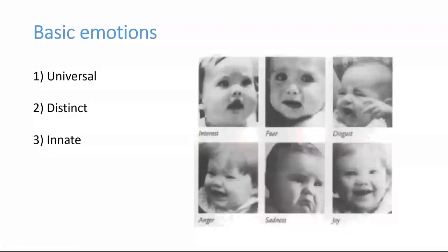The reason why this matching task seems so easy for most people is that basic or primary emotions have three characteristics. First, they are universal, meaning you can find these expressions across the world. Second, they are distinct, meaning each emotion is characterized by particular facial and physiological responses. And lastly, basic emotions are thought to be innate, meaning they are experience independent. For example, babies did not have to be taught to stick out their tongue to show disgust or to feel happy when interacting with their mom.